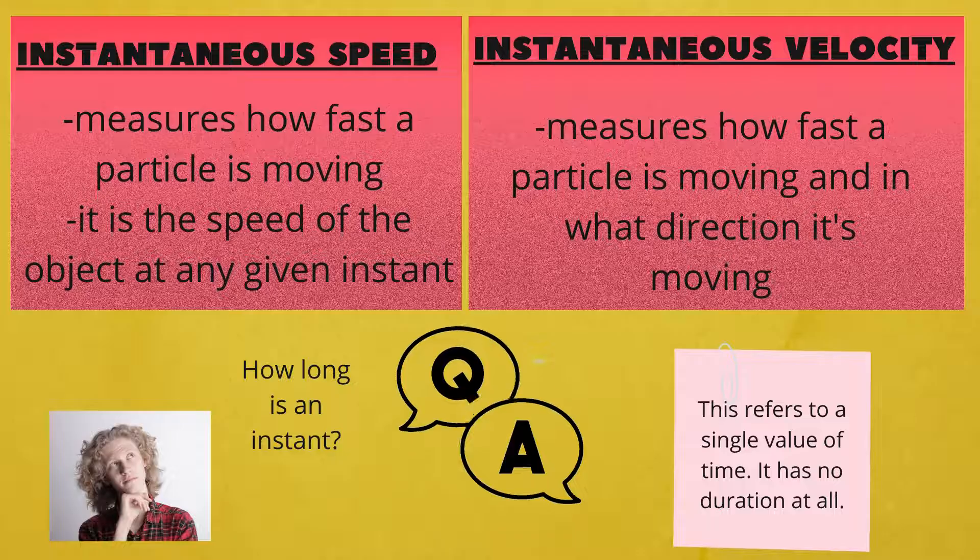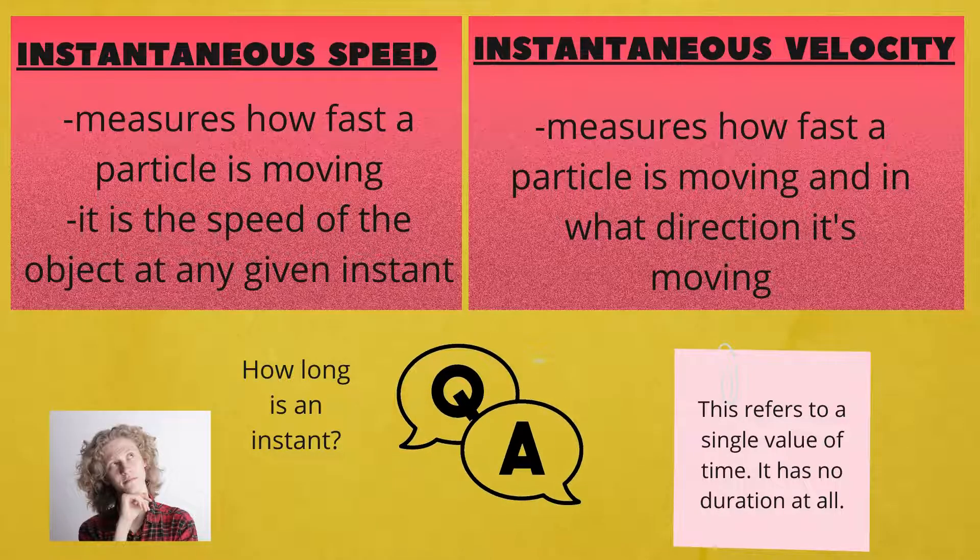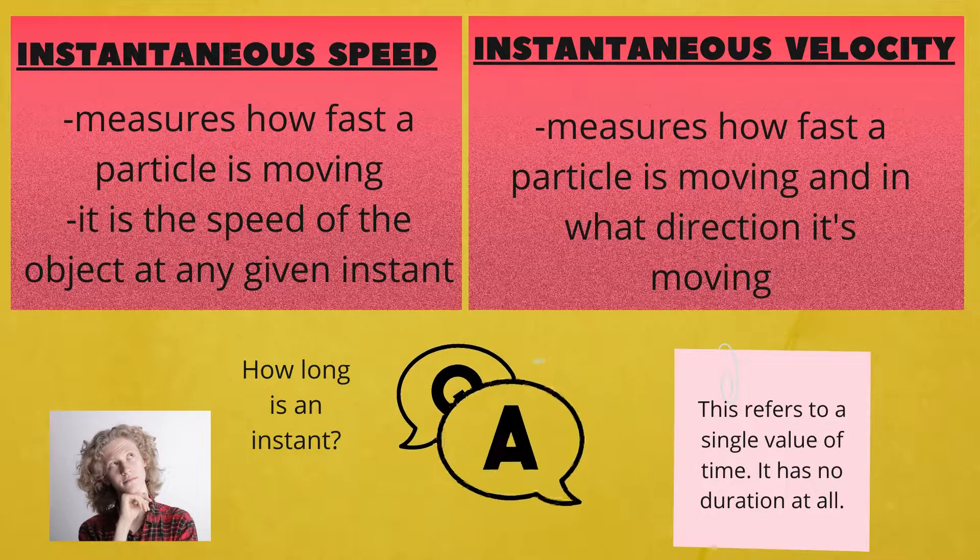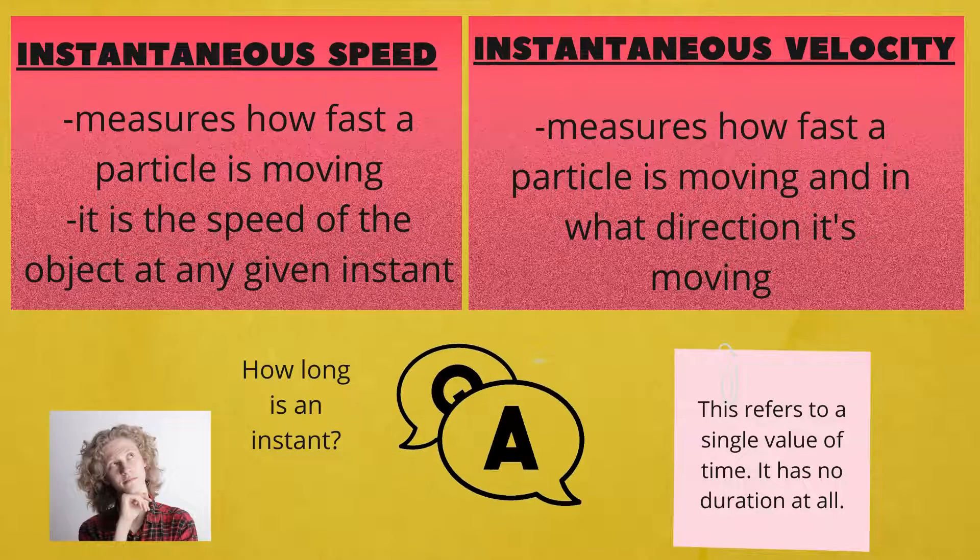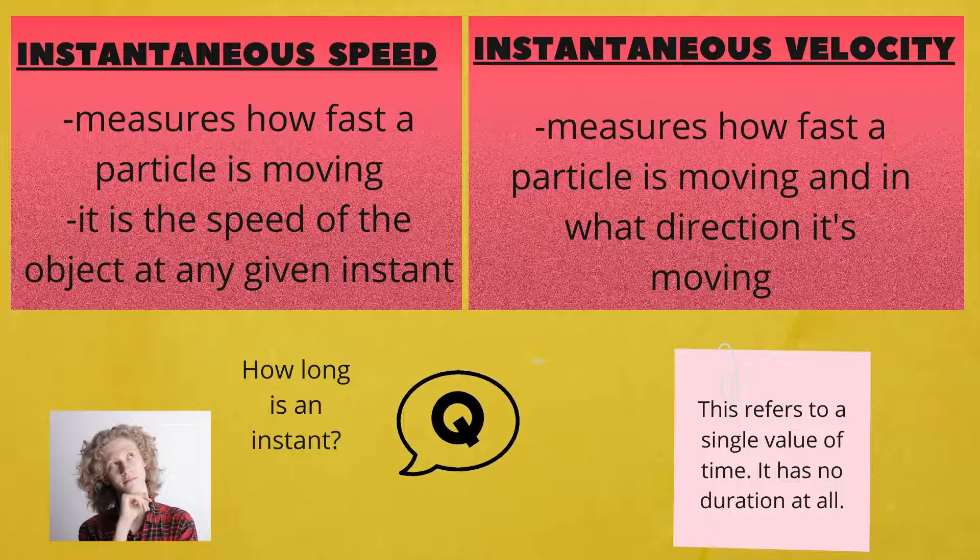Instantaneous velocity measures how fast a particle is moving and in what direction it is moving. Take note it is a vector quantity, we need to consider the direction.